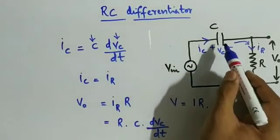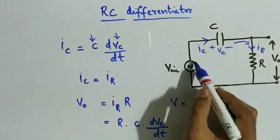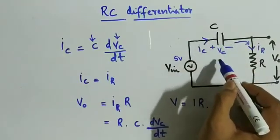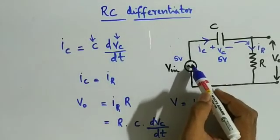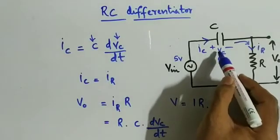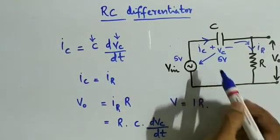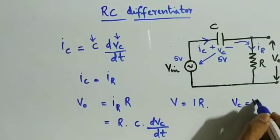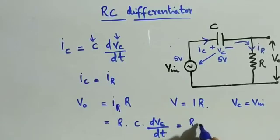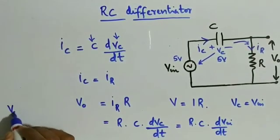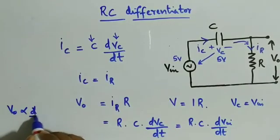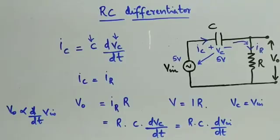When we apply the input voltage to the capacitor, if we charge the capacitor to 5 volts, the voltage is 5 volts, meaning the input voltage is equal to the capacitor voltage. So VC is equal to VIN. Now we substitute to get RC into dVIN by dT, so your output voltage is directly proportional to the derivative of the input signal.